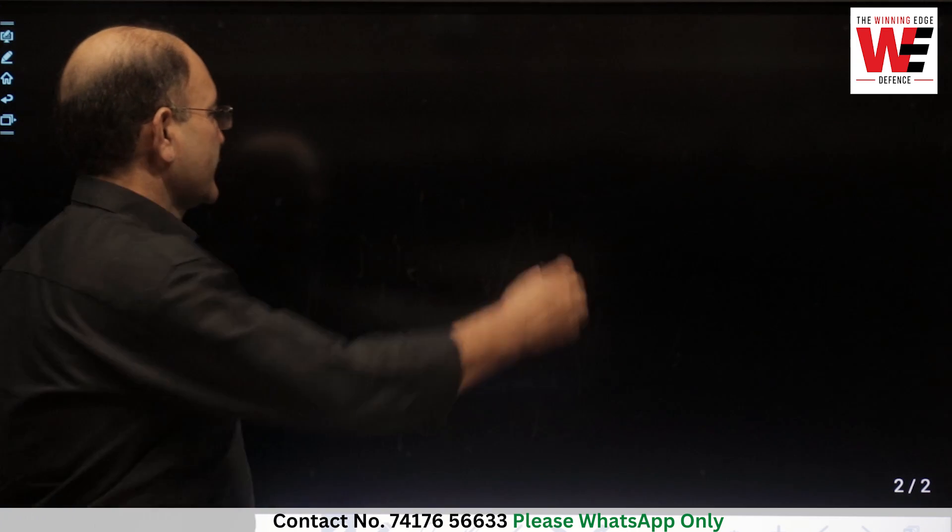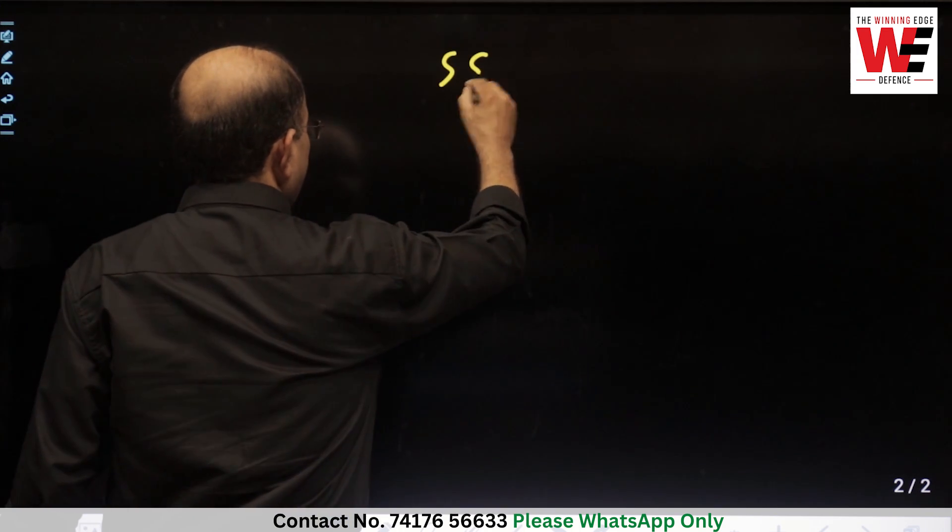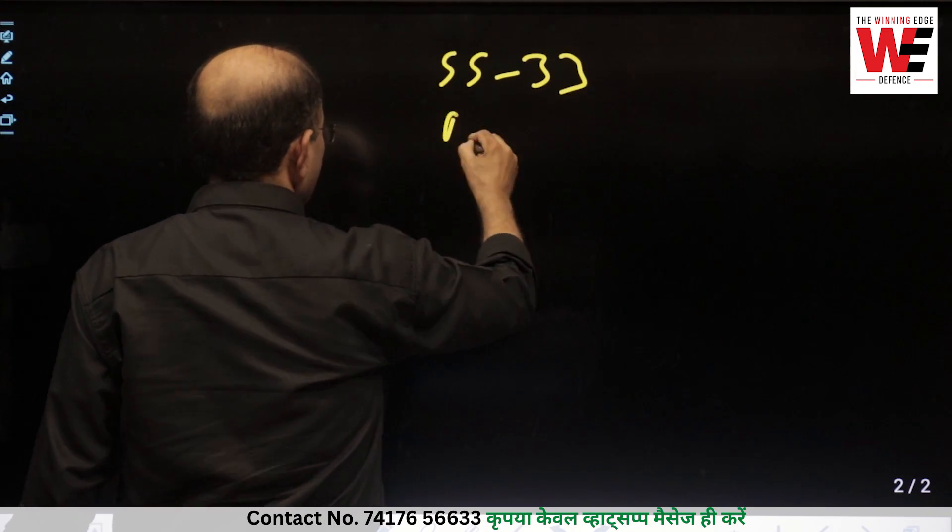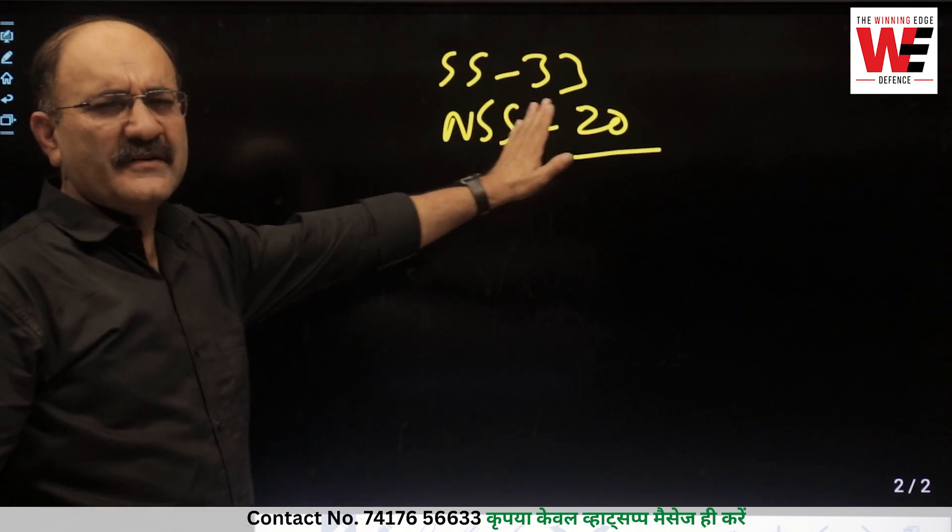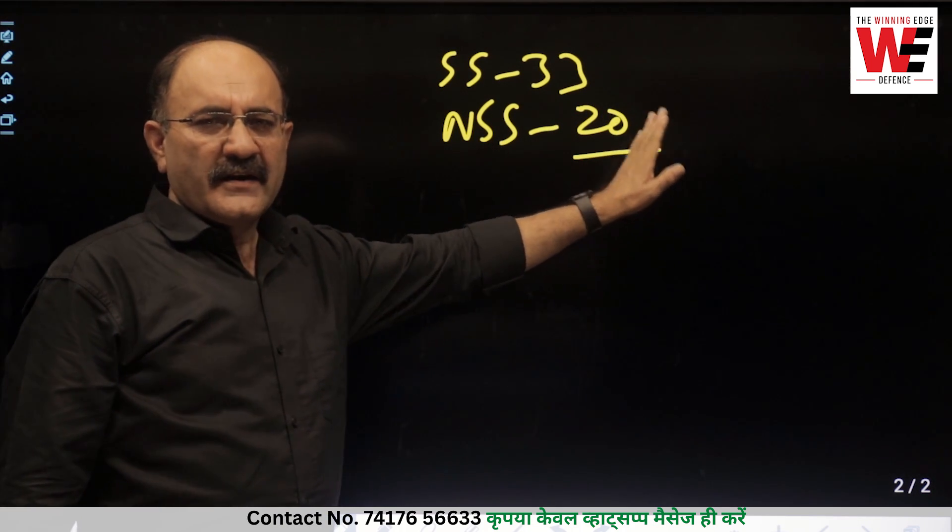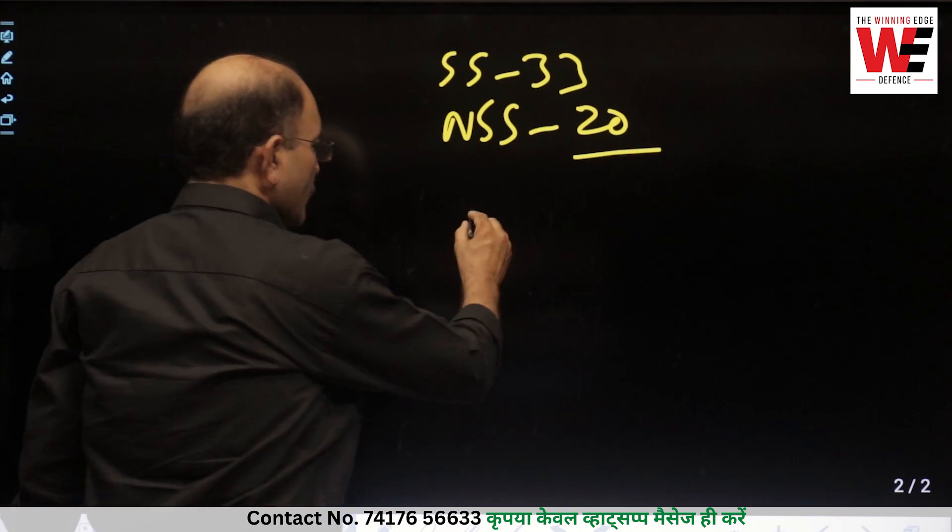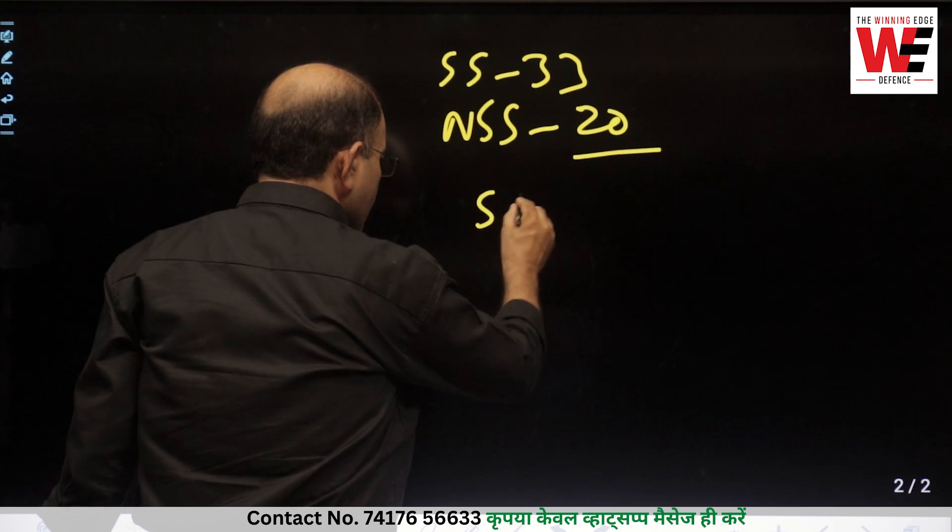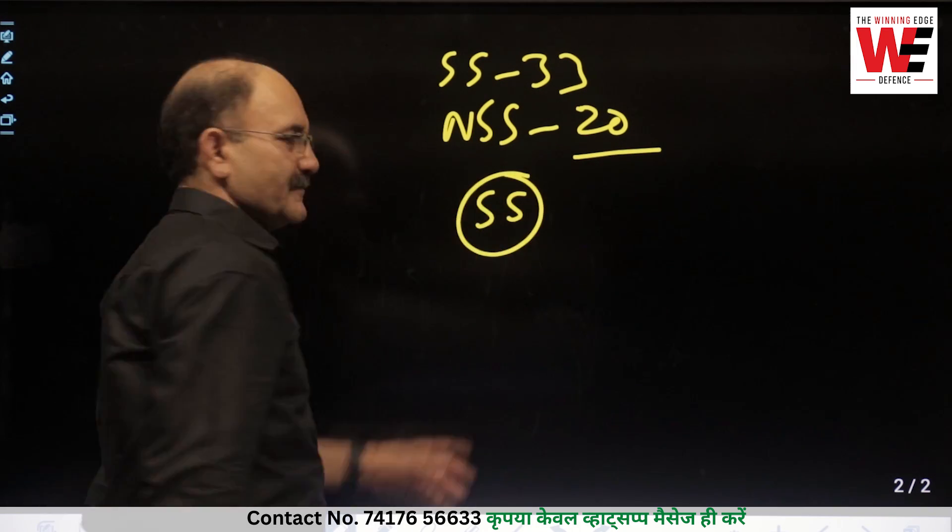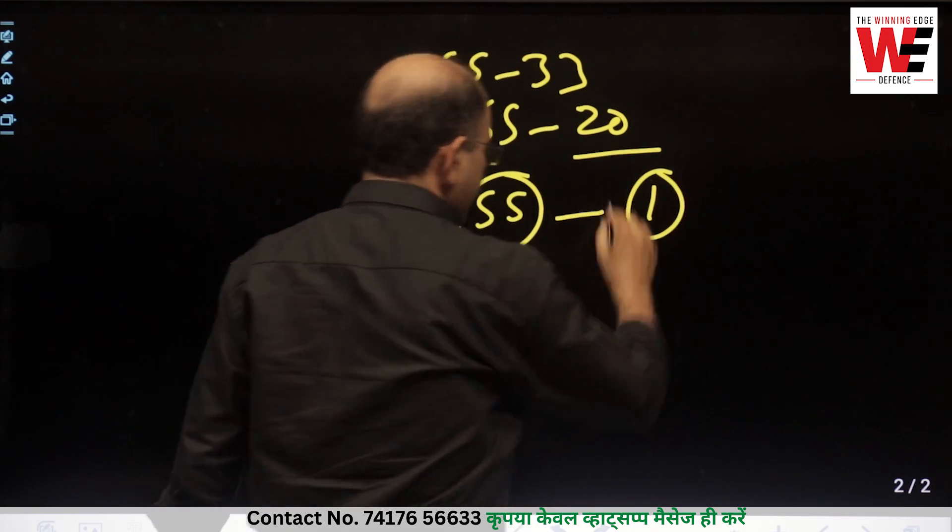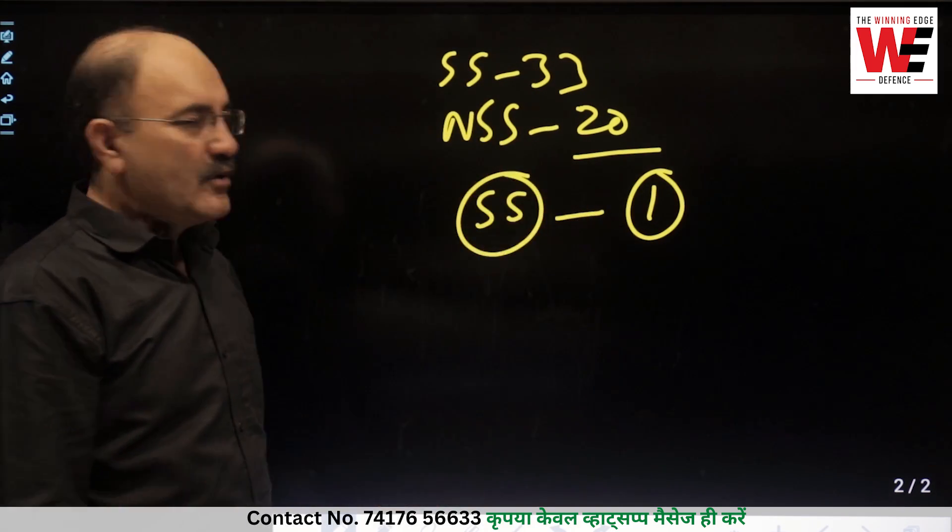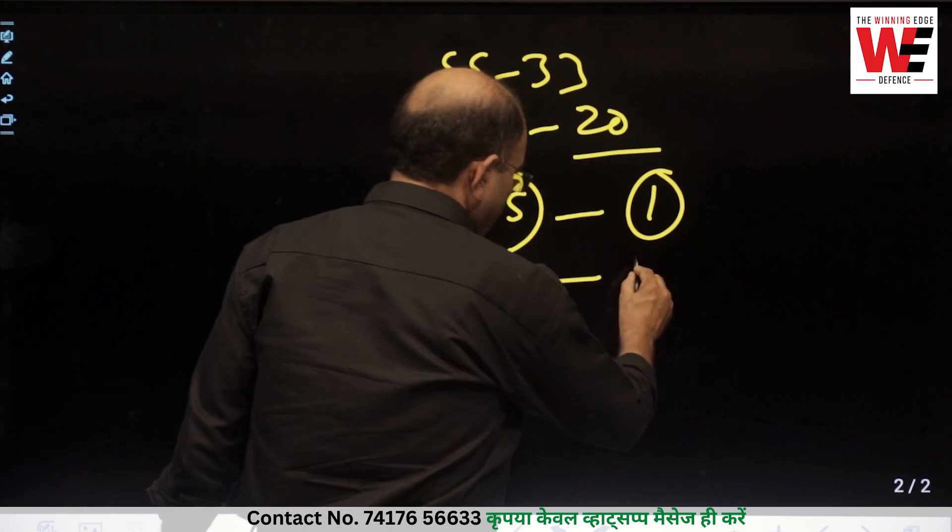UP Sainik School is one of the other schools, which is different from Sainik School. When we talk about Sainik School, there are 33 Sainik Schools and 19 New Sainik Schools, which is 20. In the past, you could choose only one Sainik School. But this year, when the e-counseling started, you can choose 10 choices.